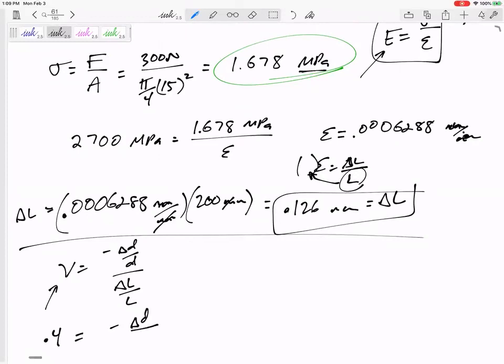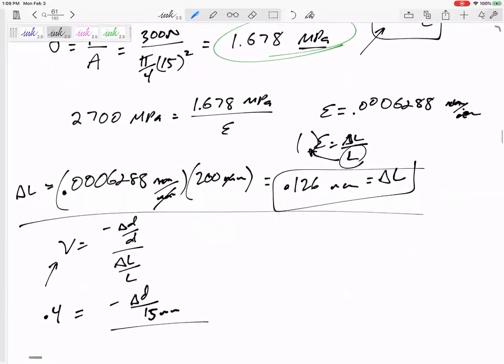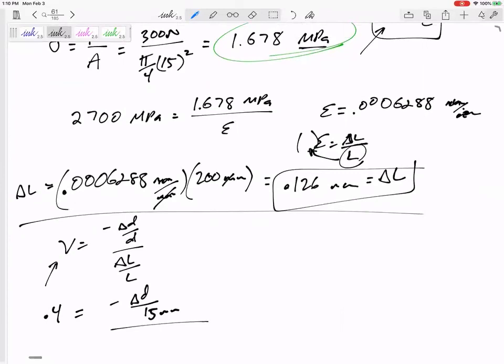I know Poisson's ratio is delta D over D over delta L over L. So if I know this value is 0.4, delta D over its original diameter, 15, over—and I could do delta L over L, but that's what strain is—0.0006288. Be careful with fractions on top of fractions, but you can handle that.